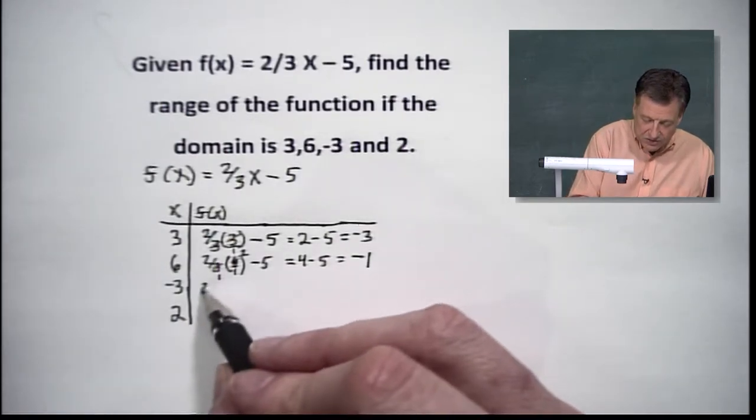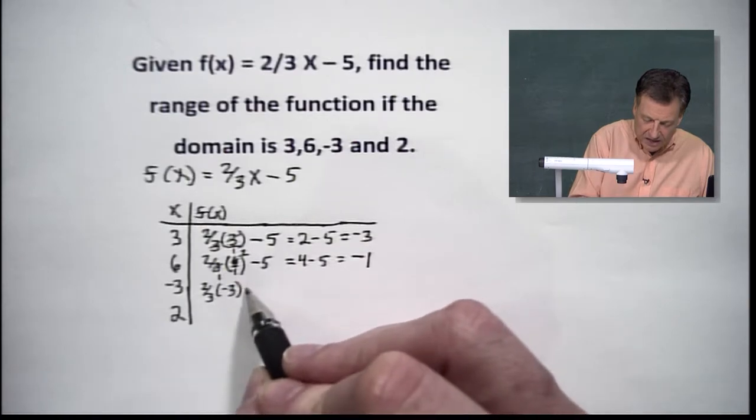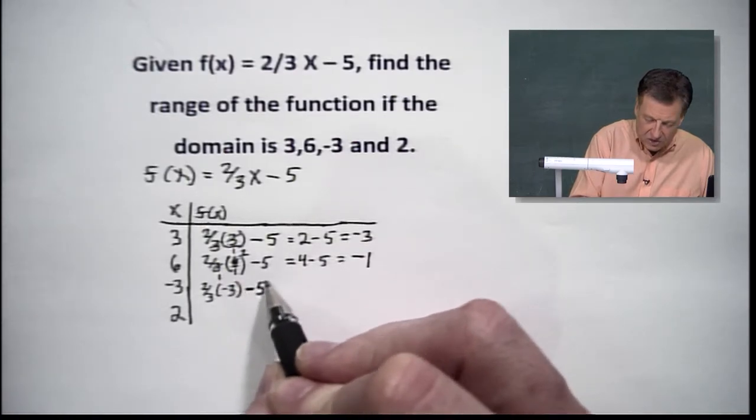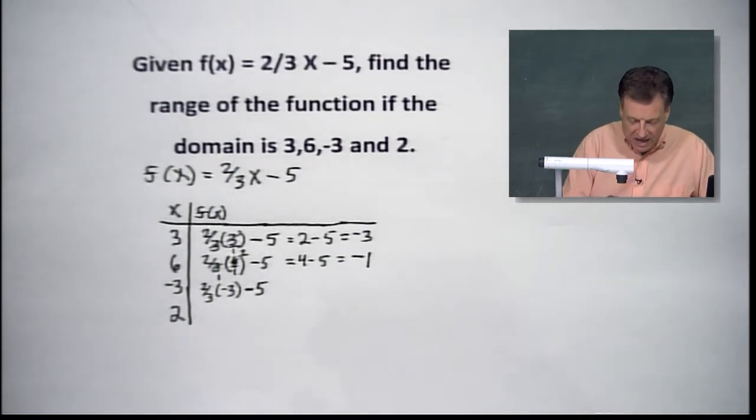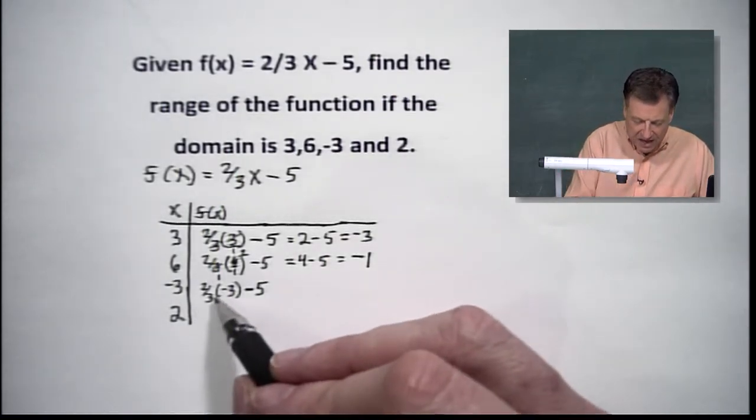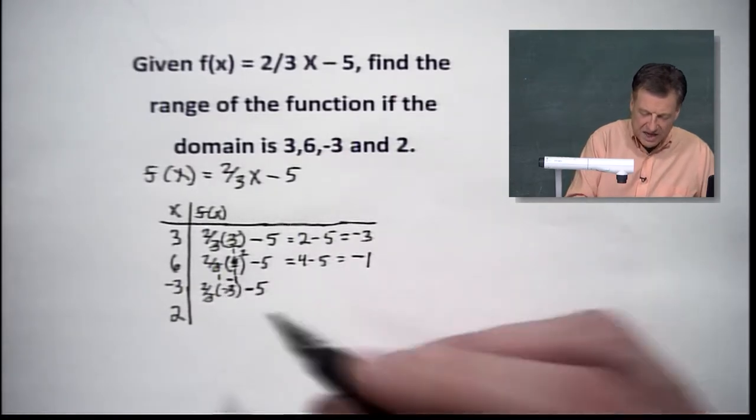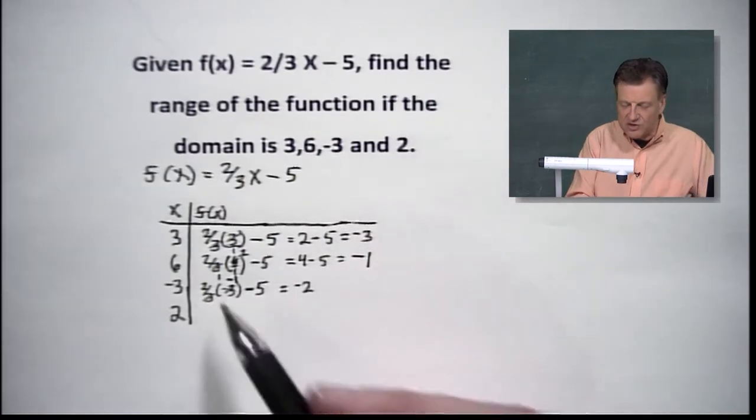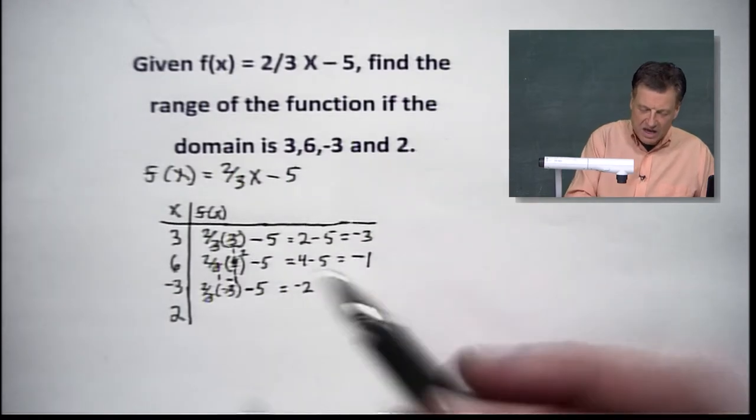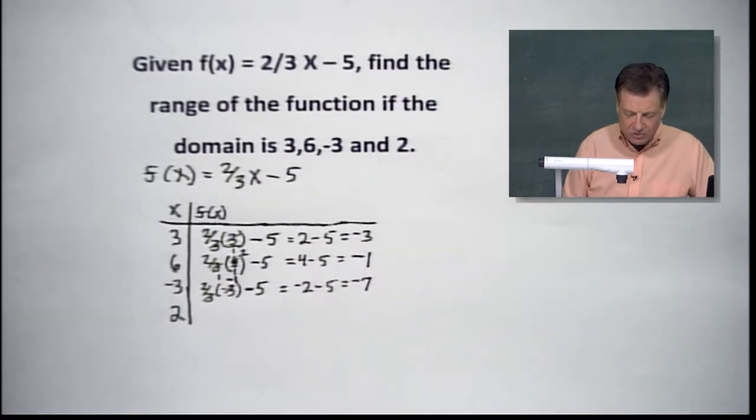What about our negative 3? We put in two-thirds and we put in that negative 3, and then we subtract our 5. Let's play it out here. I'm seeing 1s, but we've got a negative 1 left here because that sign hangs on. So that's going to be a negative 2. 2 times negative 1 gives me that negative 2. Subtract your 5, and we are now at negative 7.